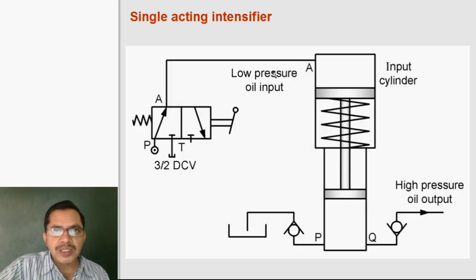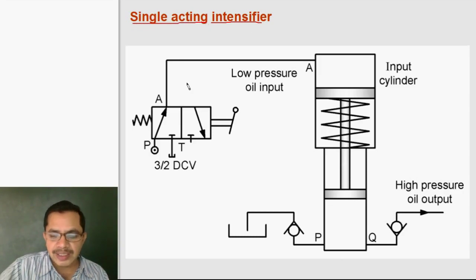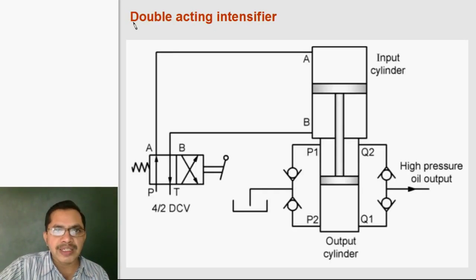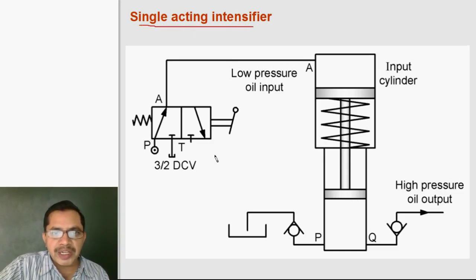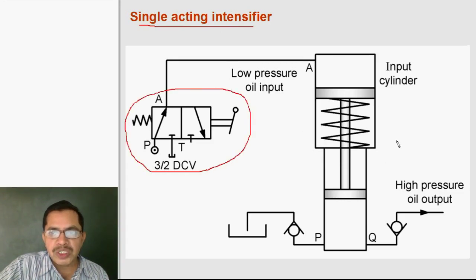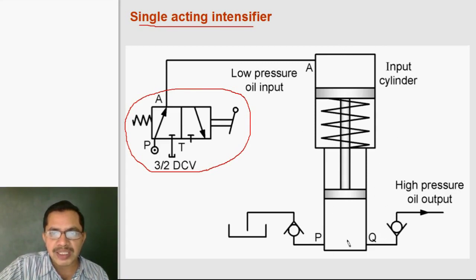There are two types of intensifiers: single acting intensifier and double acting intensifier. We shall see the single acting intensifier now. The single acting intensifier is operated with the help of a 3 by 2 direction control valve. The input cylinder is bigger in size and the output cylinder is smaller in size.